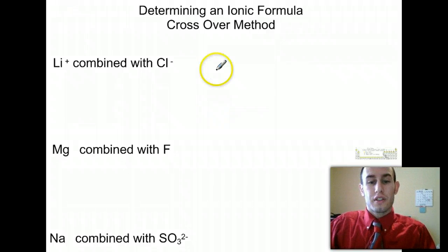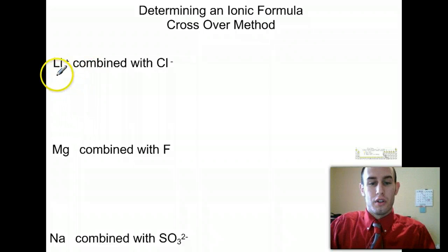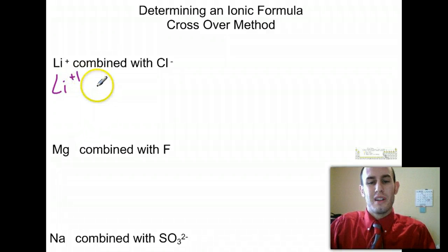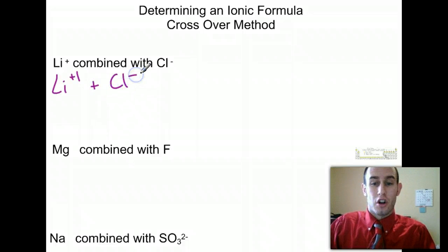Well how this crossover method works is you're going to write your lithium ion with its plus charge, and it's really a plus one but we never really write one, and that's being combined with a chlorine minus charge, and it's really minus one. And what the crossover method says is you take this charge number,